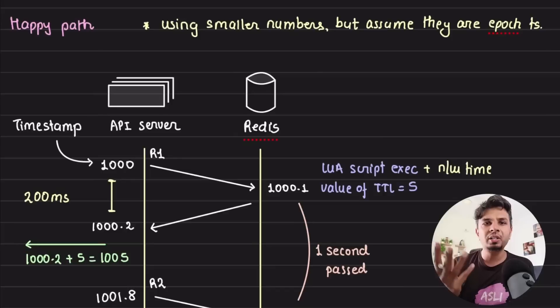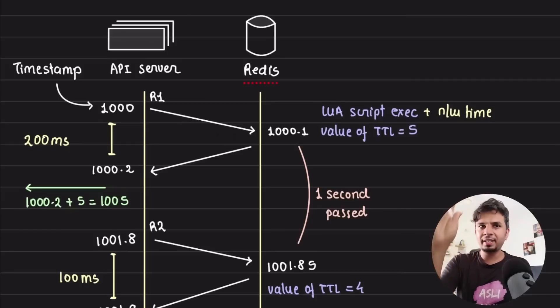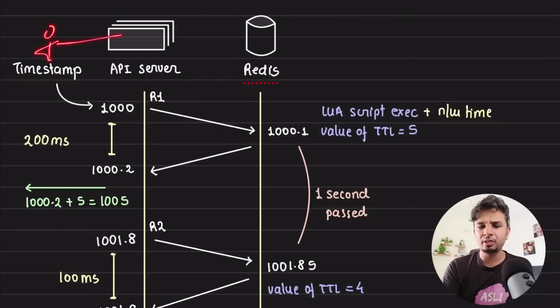Now here we have two actors: API server and Redis. Now let's say what happens at timestamp 1000. At timestamp 1000, your first request is initiated from your client. Obviously, from your client, the first request is initiated at timestamp 1000. Now this request from your API server starts to Redis. This is where your entire Lua script is fired. Now let's say time taken to travel from API server to Redis plus execution of Lua script plus returning the response and reaching it over here takes 200 milliseconds.